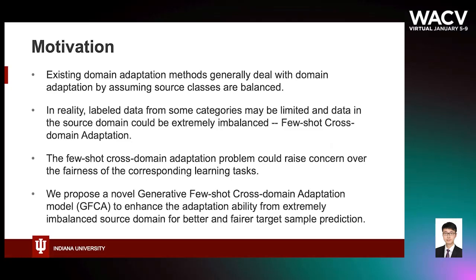To this end, we propose a novel generative few-shot cross-domain adaptation model, GFCA for short, to enhance the adaptation ability from extremely imbalanced source domain for better and fairer target sample prediction. To the best of our knowledge, this is the very pioneering work to explore the few-shot cross-domain adaptation problem for fairer cross-domain classification.